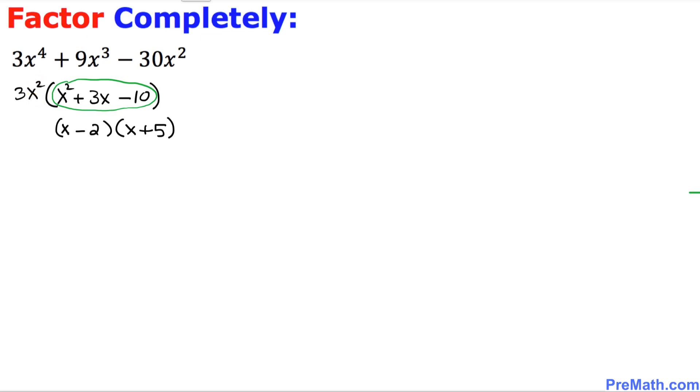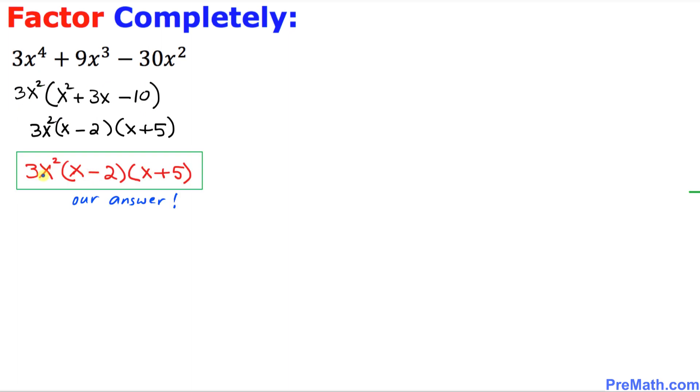We still have this 3x square outside. I am going to bring that one outside over here. Thus, this 3x square times x minus 2 times x plus 5 are our complete factors. And this is our final answer.